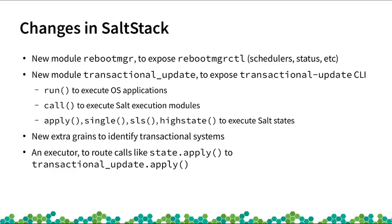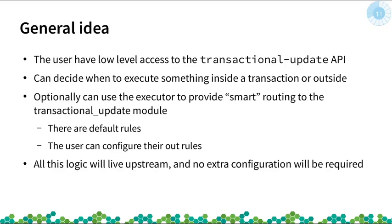On top of that, we added the classical call functions to execute Salt modules. This is the one taking care of creating the Salt minion and executing it inside a new transaction via the run command. We also added all the usual API to execute Salt states and SLS files, like apply, single, sls, and highstate. Finally, we added ways of detecting transactional systems, and we added an executor to make transparent the delegation of some actions into this new transactional update module. With this approach, the user has always low-level access to the transactional-update API and can decide when to execute something inside a transaction or outside it. At the same time, we can use the new executor to delegate into the new modules some of the actions that can have side effects on the system.